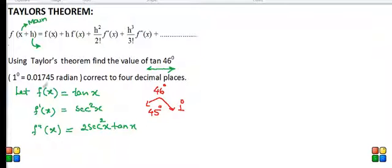So substituting x equal to 45, we get the values. F of 45 degrees equal to tan 45, that is 1.